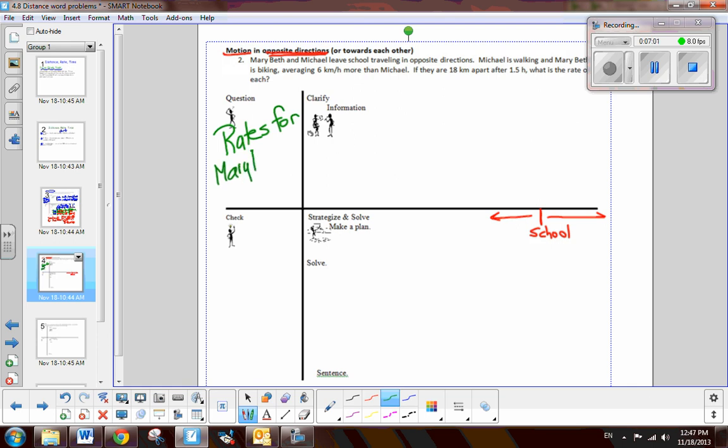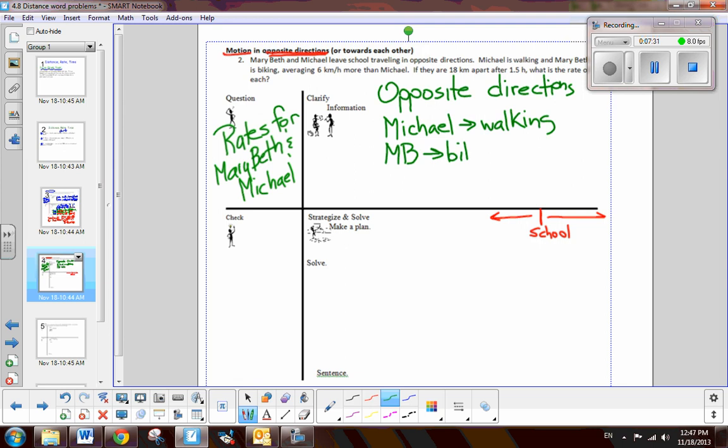Now, let's write down the facts. Well, first of all, the most important fact to begin putting this together in a diagram and classifying is they are going in opposite directions. Now, we know that Michael is walking, so he's going to be going slower. So, his rate will be slower. And, we're told that Mary Beth is biking, so she's going to be faster. And, actually, we're told that she is averaging 6 kilometers more than Michael. So, 6 kilometers, but it's 6 kilometers per hour more than, which means plus, Michael. So, whatever Michael's rate is, she's going to be 6 kilometers more than that.